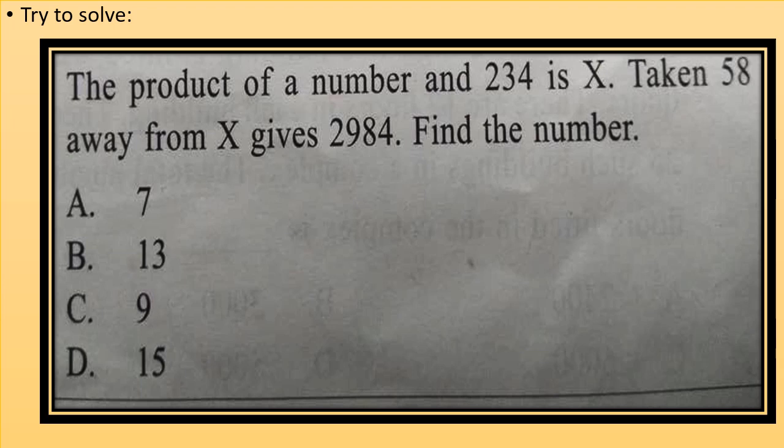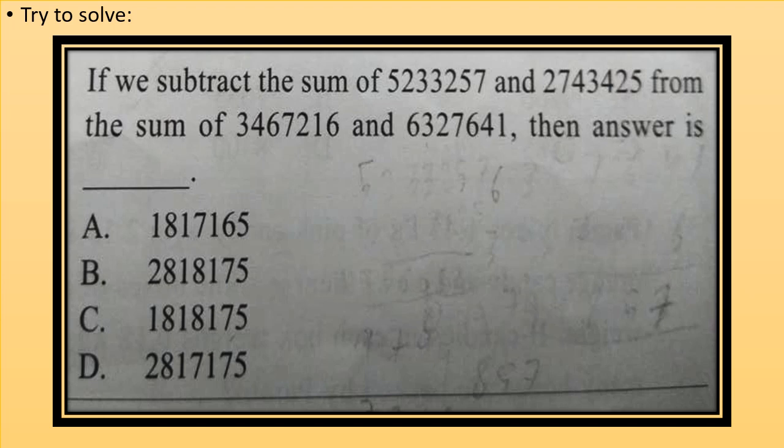If we subtract the sum of 5233257 and 2743425 from the sum of 3467216 and 6327641. Then answer is. Now calculate the sum of both the numbers first. Then subtract the sum from another sum.